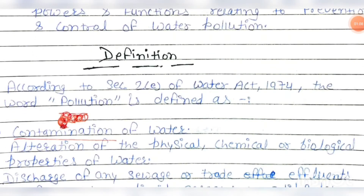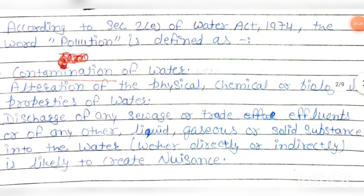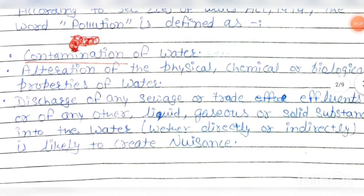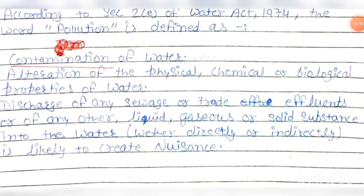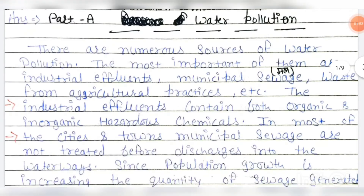According to Section 2(e) of the Water Act 1974, the word 'pollution' is defined as contamination of water or alteration of the physical, chemical, or biological properties of water, or discharge of any sewage or trade effluents or of any other liquid, gases, or solid substance into water, whether directly or indirectly, which is likely to create a nuisance. Anything discharged directly or indirectly into water that causes contamination counts as water pollution.